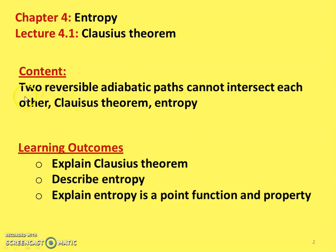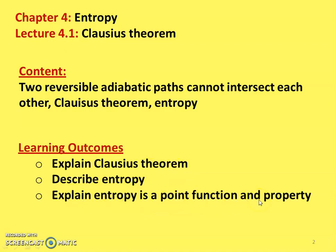In lecture 11, we are going to discuss: two reversible adiabatic paths cannot intersect each other, and we will introduce a property called Entropy. The learning outcome for students: at the end of the lecture, the student will be able to explain Clausius Theorem, describe Entropy, and explain that Entropy is a point function and property of the system.